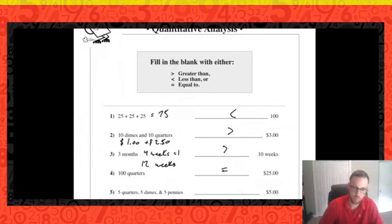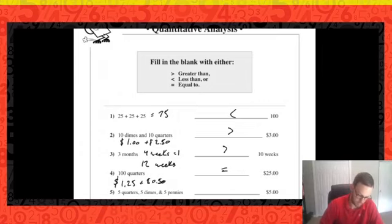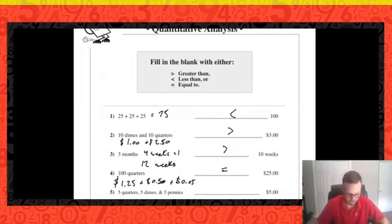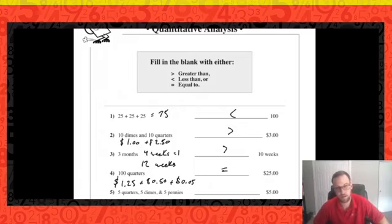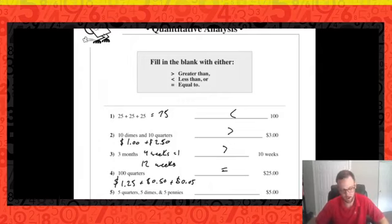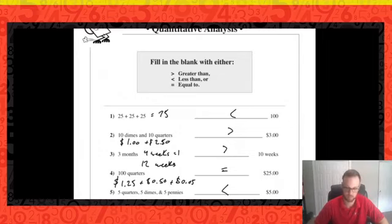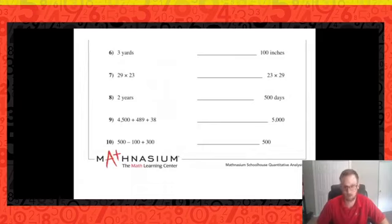Number five: five quarters plus five dimes plus five pennies compared to five dollars. Five quarters is a dollar twenty-five, five dimes is fifty cents, and five pennies is five cents. To get from a dollar twenty-five up to five dollars we'd need around four more dollars, and fifty-five cents doesn't come close. This is significantly less than five dollars.